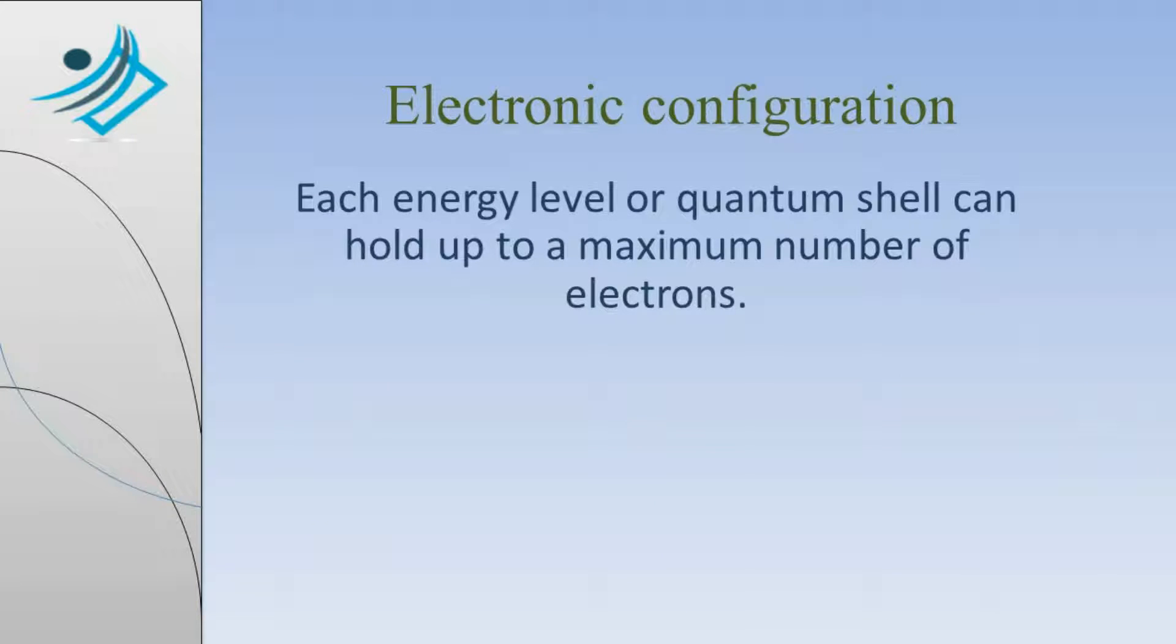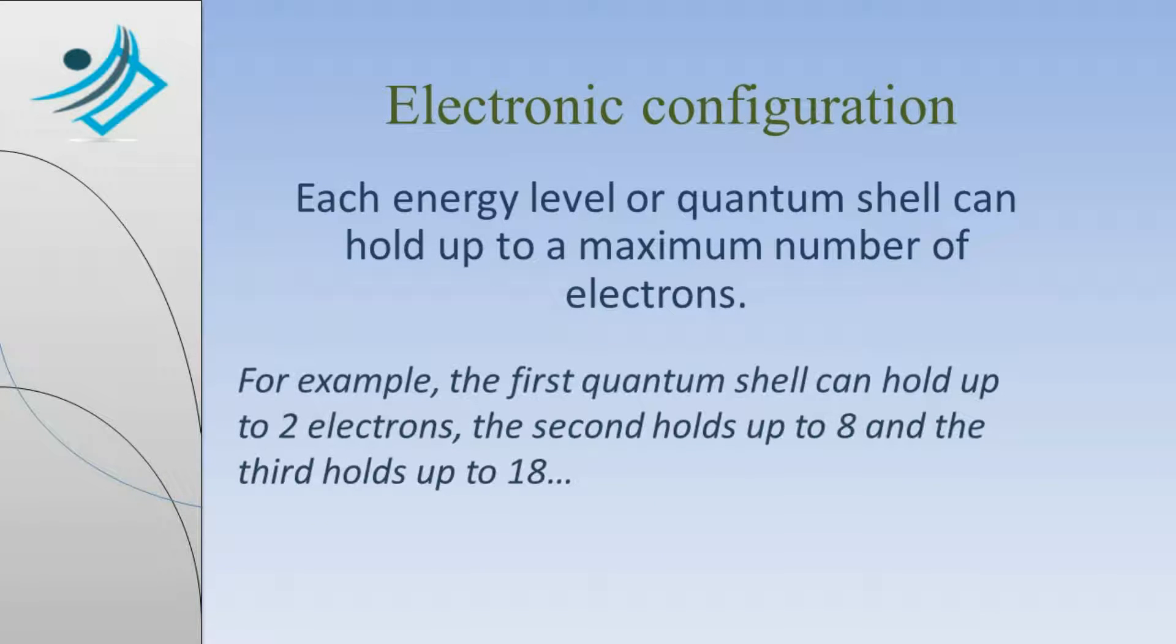Each energy level or quantum shell can hold up to a maximum number of electrons. For example, the first quantum shell can hold up to 2 electrons, the second holds up to 8, and the third holds up to 18.